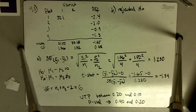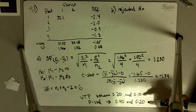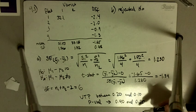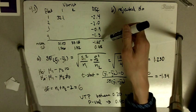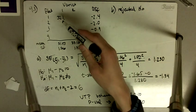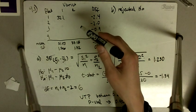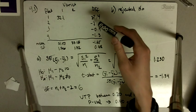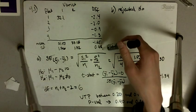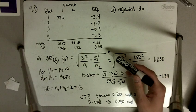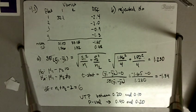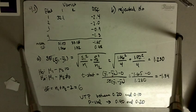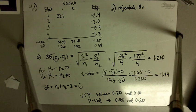Here we would not reject the null hypothesis. But this is incorrect because of the blocking — these are not independent samples, and we can look directly at the difference and do the calculation based on the difference rather than treating them as independent samples. So whenever you have a block with only two observations in each block, treat it as a paired sample.